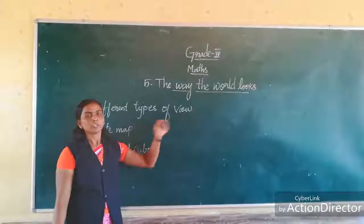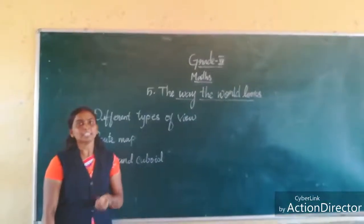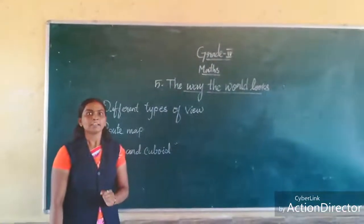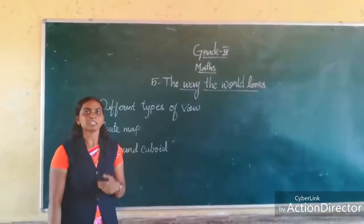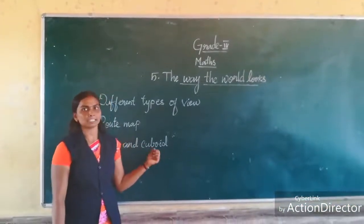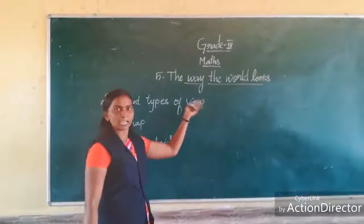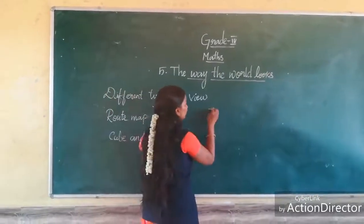View — how things look differently in shape and size when we see them from different views and distances. First, we are going to see the types of view.